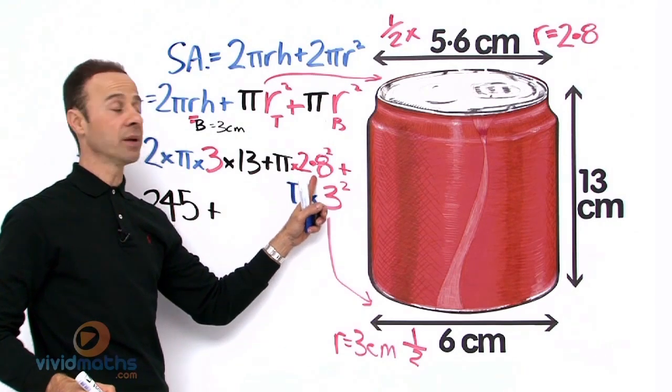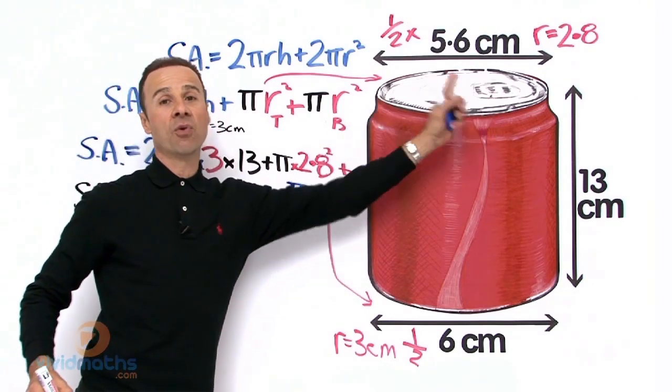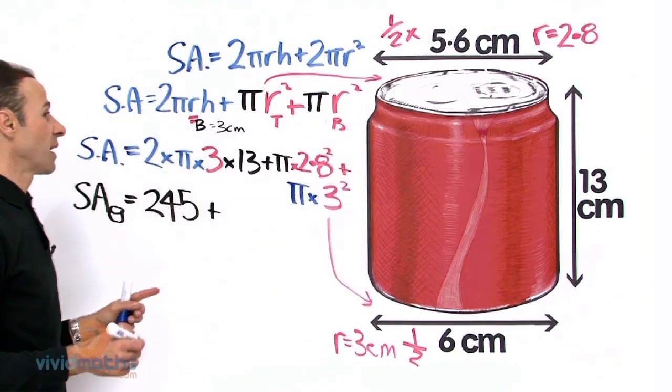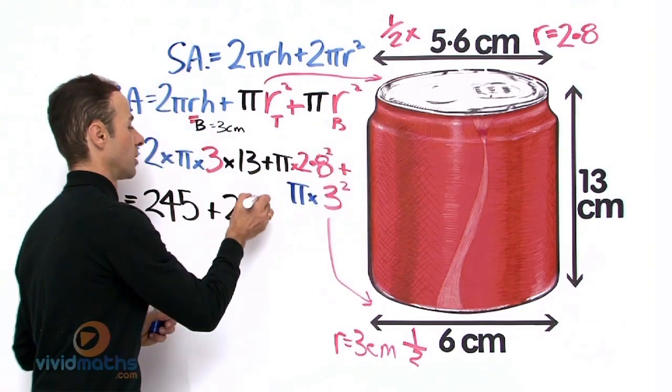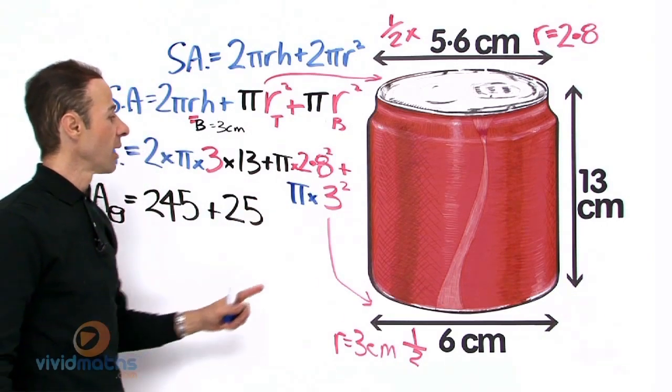And then we have π times 2.8 squared, and that is for the top up here. The radius is 2.8, so that surface area right over there is going to give us a value of 25 cm² rounded up again.